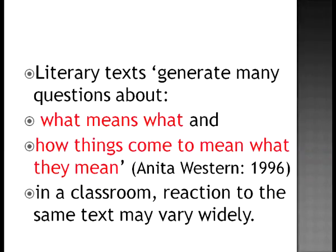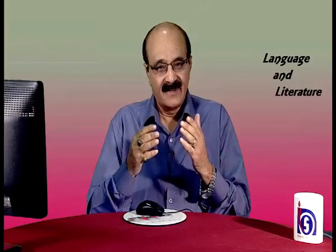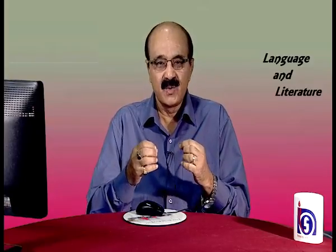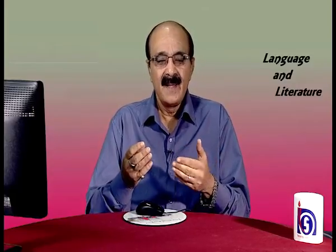Literary texts generate many questions about what means what and how things come to mean what they mean. In a classroom, reaction to the same text may vary widely. If there were a definite meaning, every student should come out with one response. But this is not the case — we have multiplicity of responses. This is because a word or sentence in literature has several connotations, several meanings, several layers of meaning.